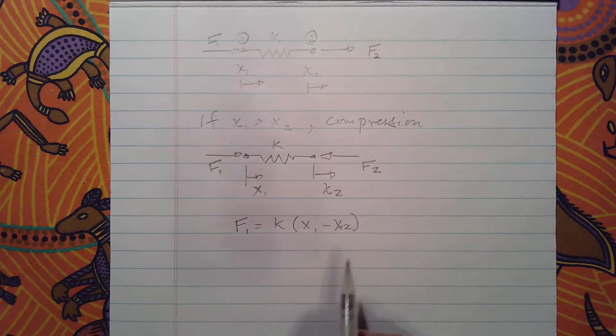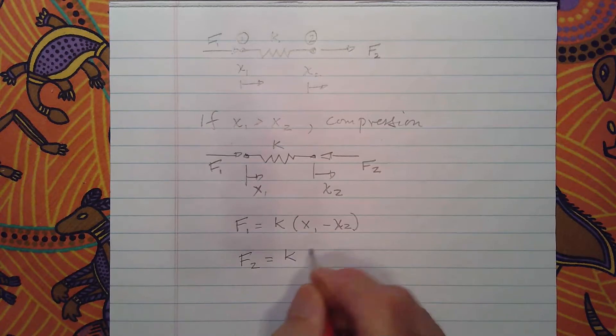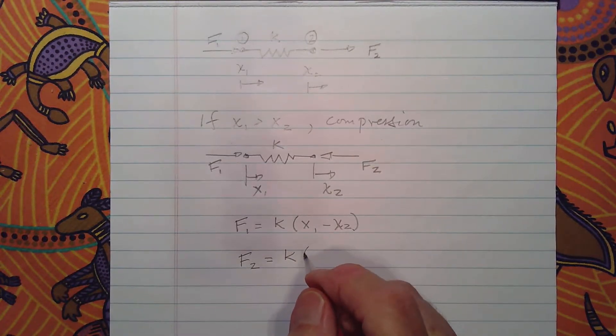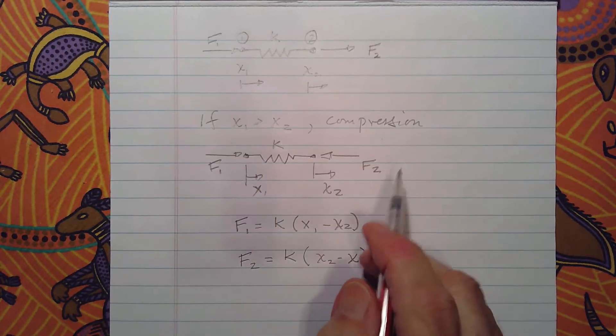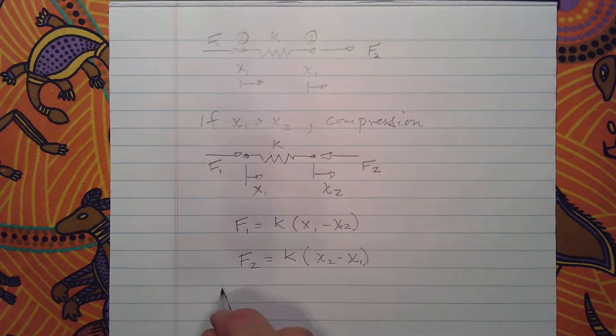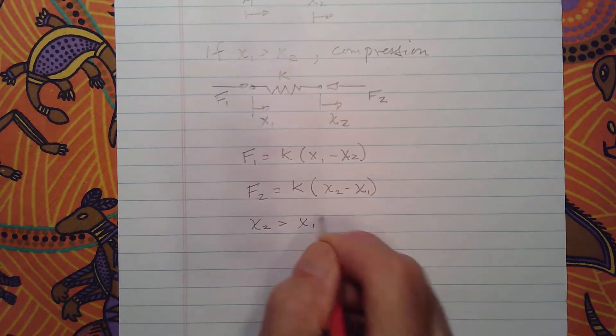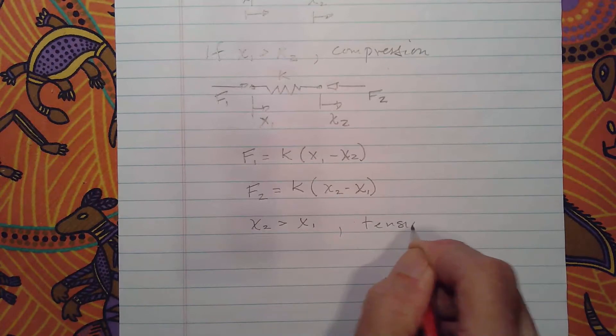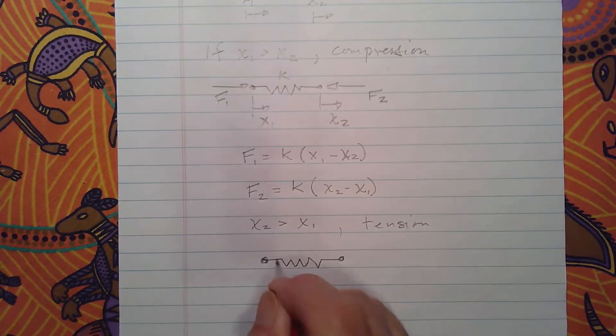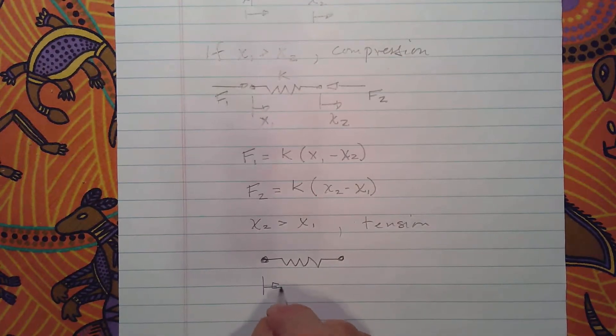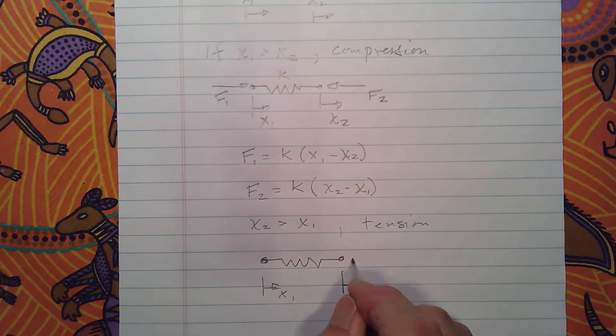This is a positive number because we said x1 is greater than x2. Now f2 is k and it's negative, so this is going to be x2 minus x1, which will be a negative number, and you can see that f2 is pointed to the left. Now if we have the case where x2 is greater than x1, then this would be the case where we have the spring in tension. And what it would look like: here's our spring element. x2 has moved away from x1, so it's further apart from x1 than it was at the beginning, and that means that we're going to have forces that are directed this way.